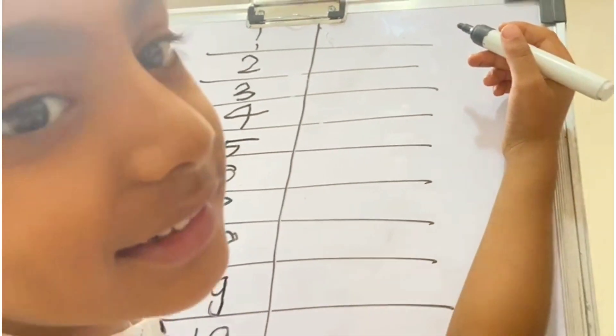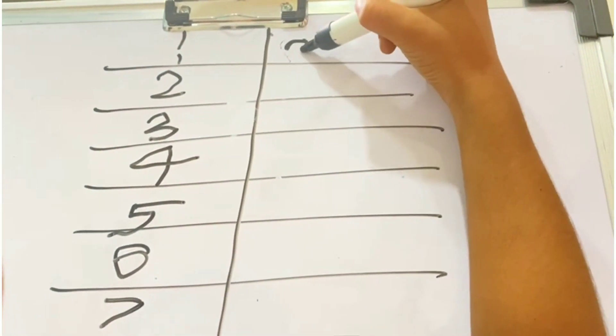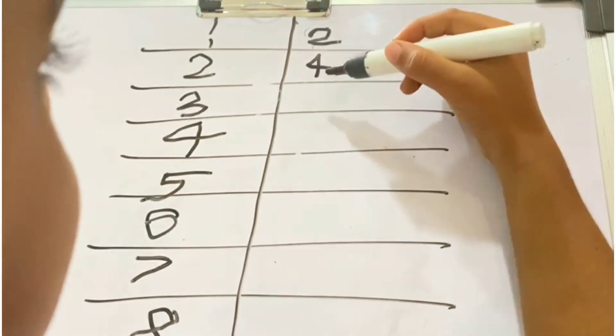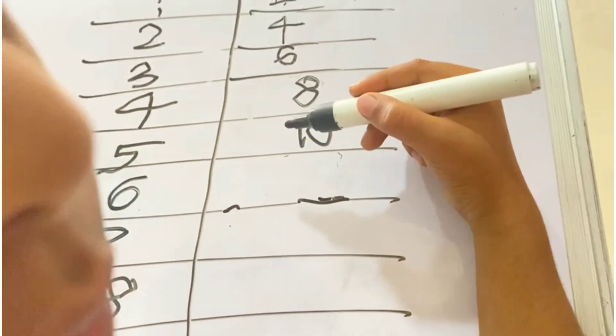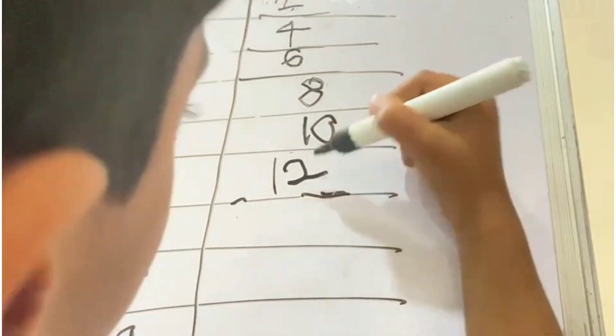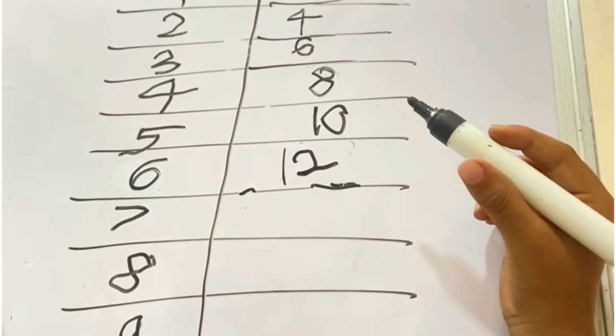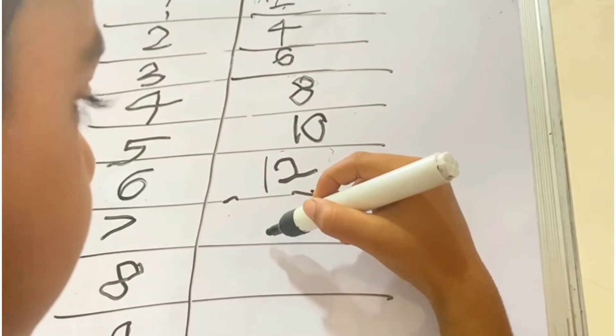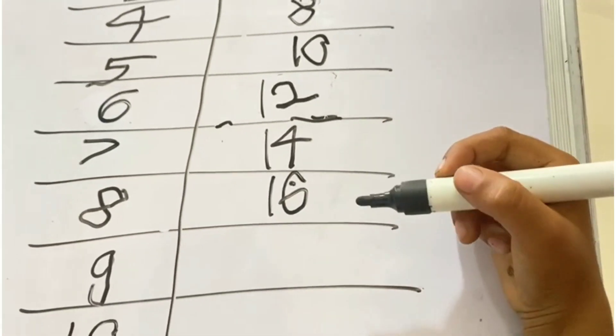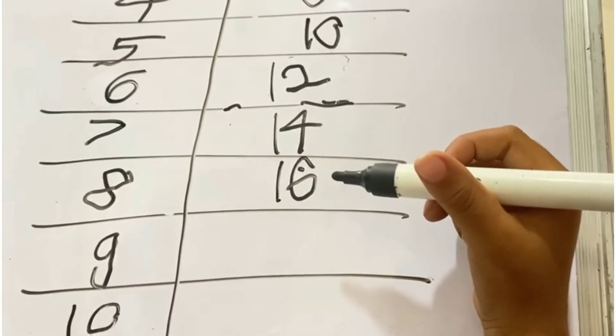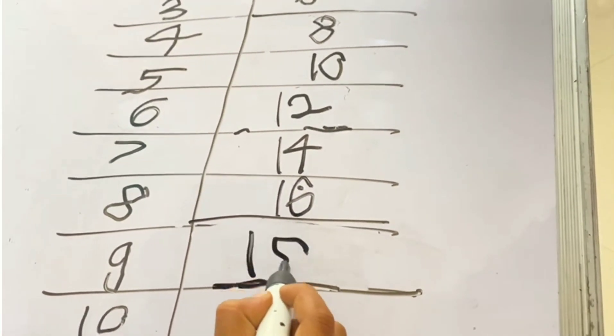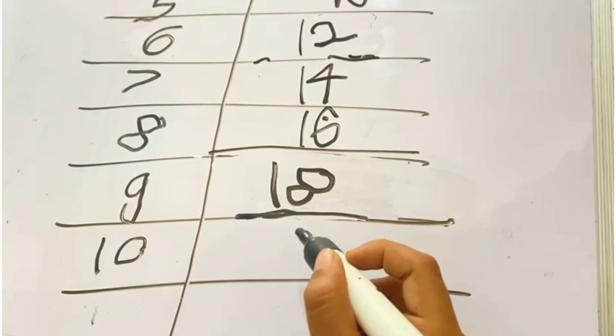Now write 2 tables. 2 ones are 2, 2 twos are 4, 2 threes are 6, 2 sixes are 12, 2 sevens are 14, 2 eights are 16, 2 nines are 18, 2 tens are 20.